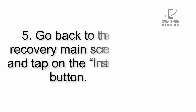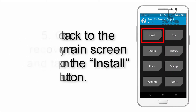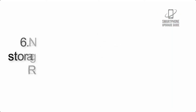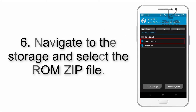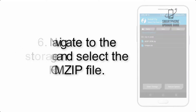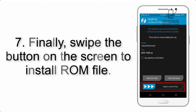Step 4: Swipe the button to wipe the device. Step 5: Go back to the recovery main screen and tap on the Install button. Step 6: Navigate to the storage and select the ROM zip file.